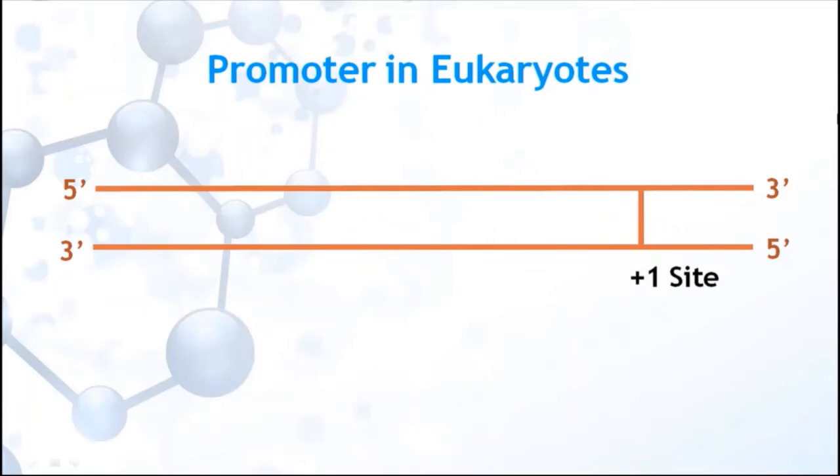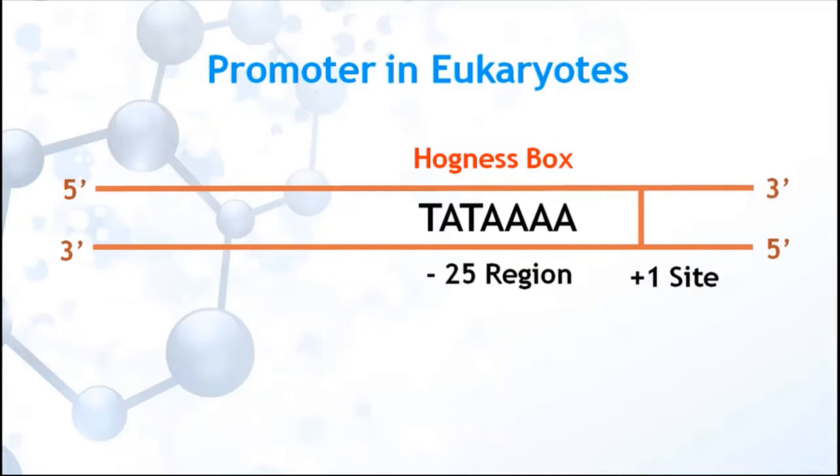In eukaryotes, the promoter sequence is called the Hogness box. It is located at 25 to 30 base pairs upstream of the transcription start site and consists of conserved sequences TATAAA. Further upstream, between 70 to 80 base pairs, there is another sequence, GGCCAATCT, called the CAAT box.